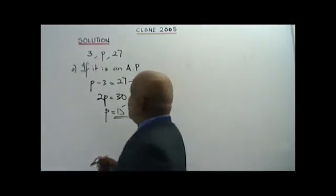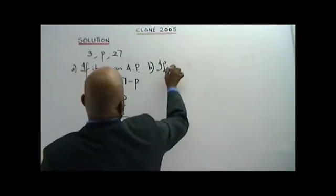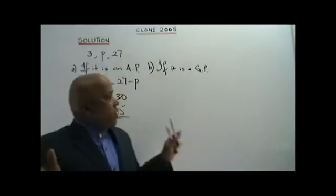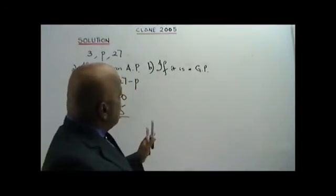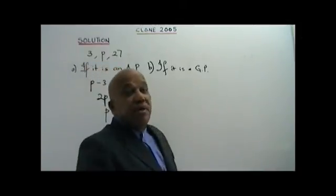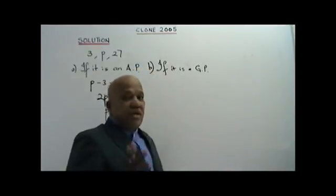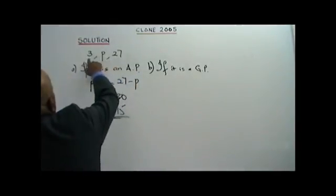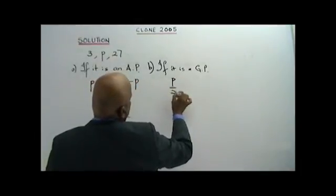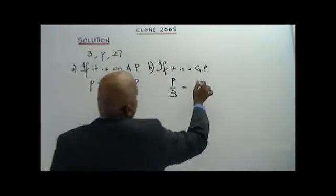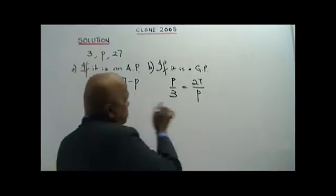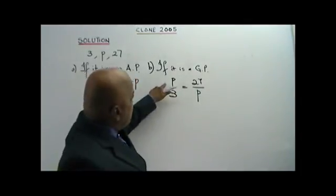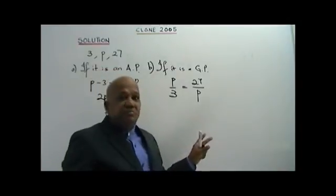Part B: if it is a Geometric Progression, what is the value of P? In Geometric Progression, the engine room is the common ratio. How do we get the common ratio? The right term divided by the left term. So P divided by 3 equals 27 divided by P. I put P over 3 on this side to cut one step less.